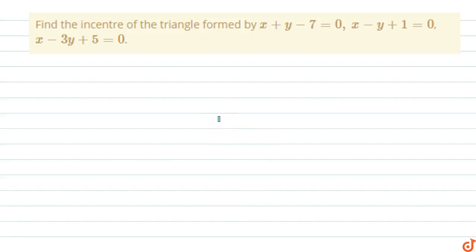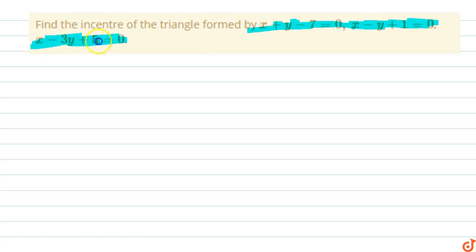In this question, find the incenter of the triangle formed by the lines x + y - 7 = 0, x - y + 1 = 0, and x - 3y + 5 = 0. We have three lines, and we have to find the incenter of the triangle formed by these three lines.